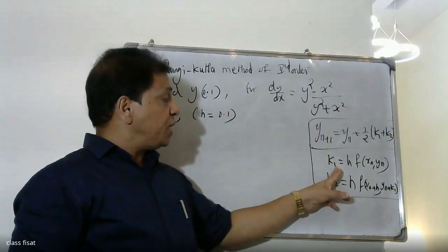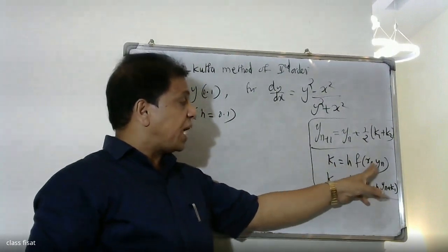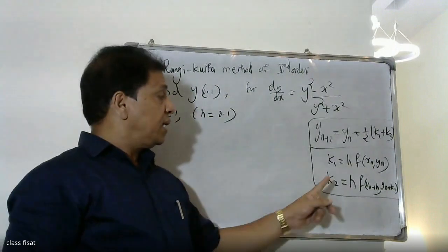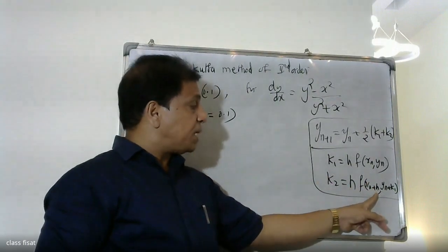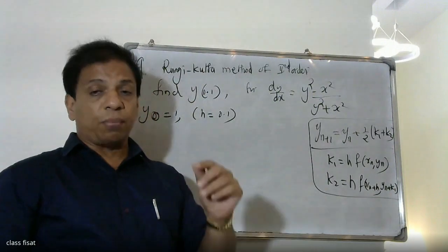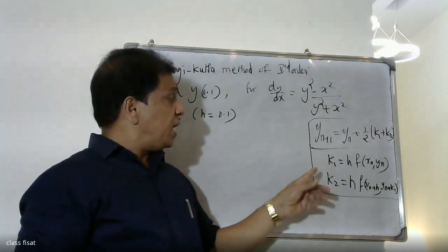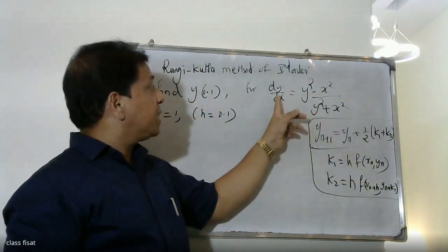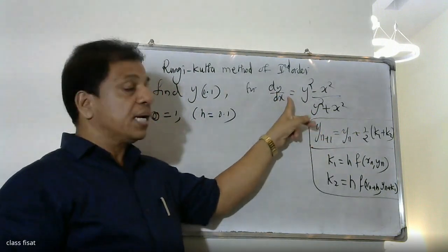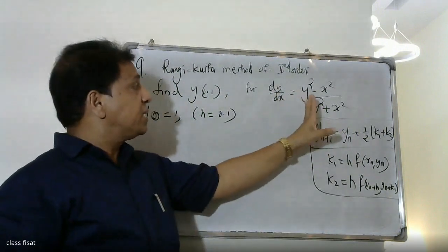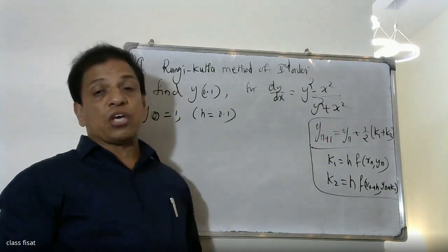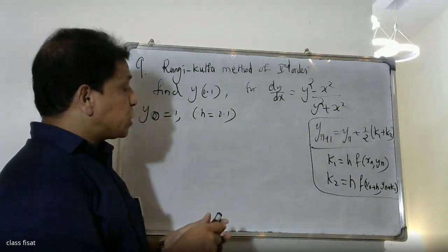For this formula, k2 is equal to h times f of (x_n plus h, y_n plus k1). The k1 value is equal to h times f of (x_n, y_n). Next, k2 is equal to h times f of (x_n plus h, y_n plus k1).